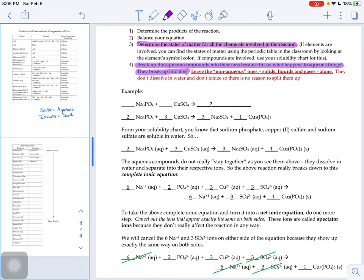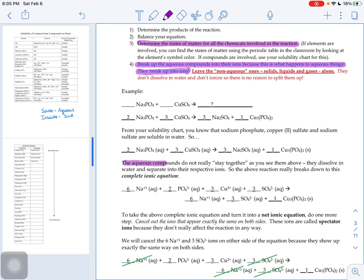We learned at the beginning of these notes that aqueous compounds don't really stay together as you see them above. They dissolve in water, and what dissolving in water means is that they're going to separate into their respective ions.